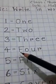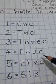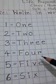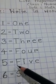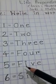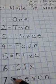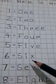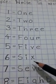Here is four — F-O-U-R. Four. Here is five — F-I-B-E. Five. Six — S-I-X. Six.